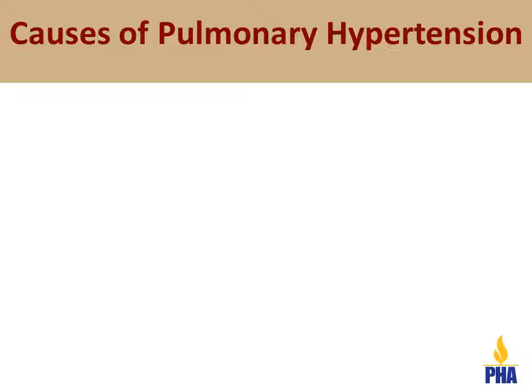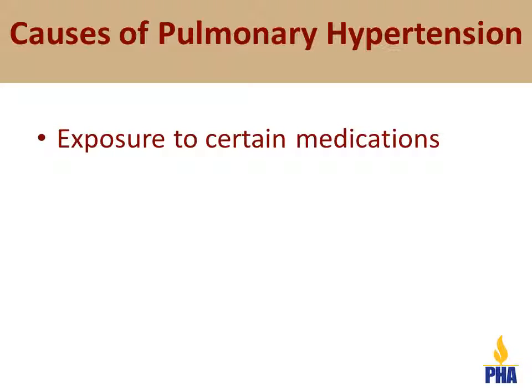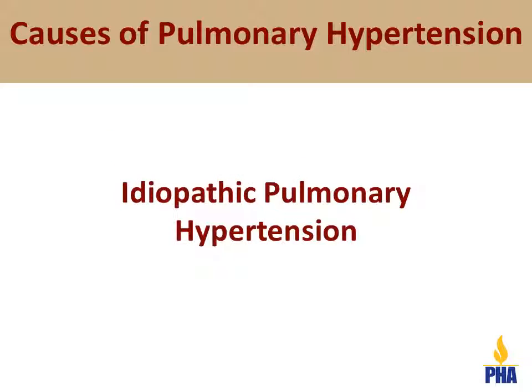There are many different causes of pulmonary hypertension. For example, exposure to certain medications as well as heart defects such as a hole in the heart may cause pulmonary hypertension. But in many cases, we do not know the cause and we call it idiopathic pulmonary hypertension.